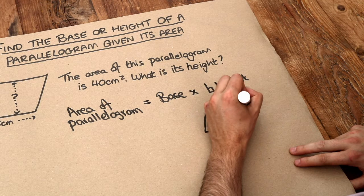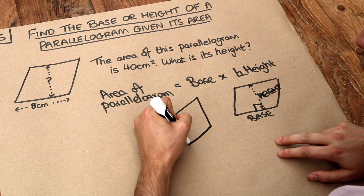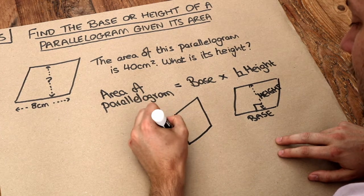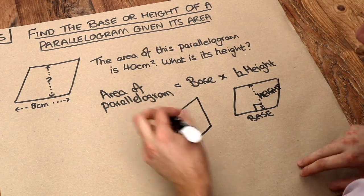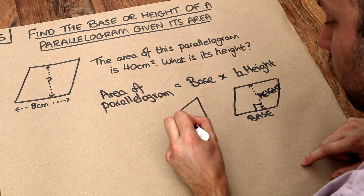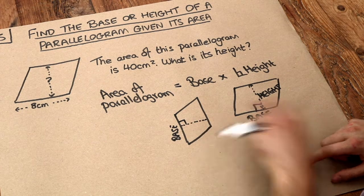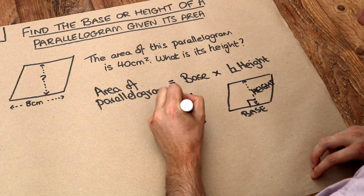And the base doesn't necessarily have to be horizontal. I could have a parallelogram like this and then if this was the base here, then the perpendicular height would be the line which is at right angles to this base. This is the base, at right angles would be this perpendicular line here and that would then be the height.